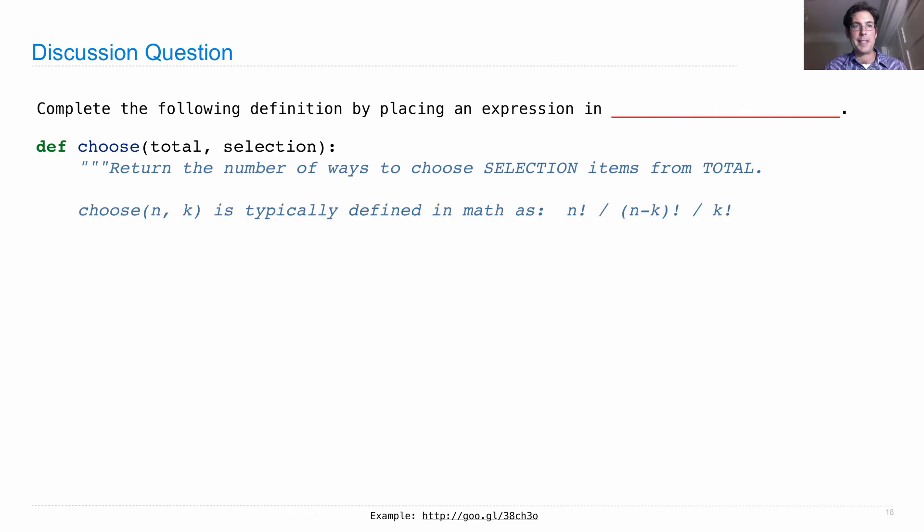Choose n k is typically defined in math as n factorial divided by n minus k factorial divided by k factorial. That's not necessarily the most intuitive way to think about this. Really the way I like to think about it is as a numerator and a denominator, where the numerator involves selecting the different things. You start out with five different fingers to choose from, that's n, and then you pick one, then you pick another one among the four that remain.